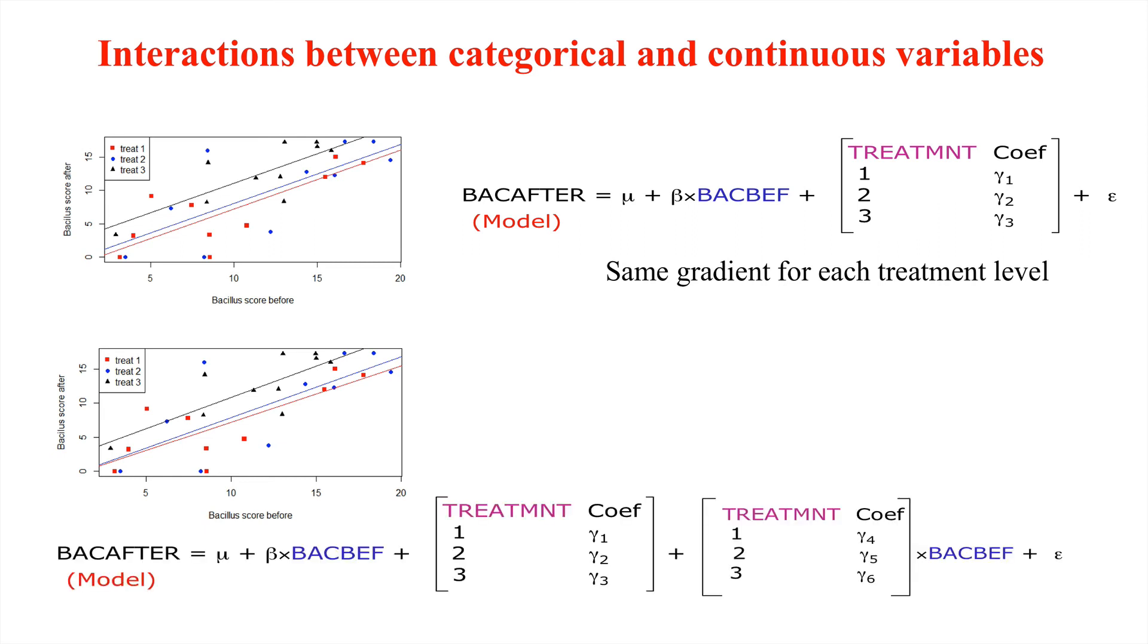What would that model look like? Well, in its simplest form it would be of this type here where we have the beta times back before as always, we have the treatment level adjustment but then also we have what's called an interaction between the categorical variable and the continuous variable. For example, we've got gamma 4 for treatment 1 times back before. When added to the beta coefficient would change the overall gradient just for that individual treatment and so on. We can easily specify a model on which there's a different gradient for each treatment level by inserting an interaction.